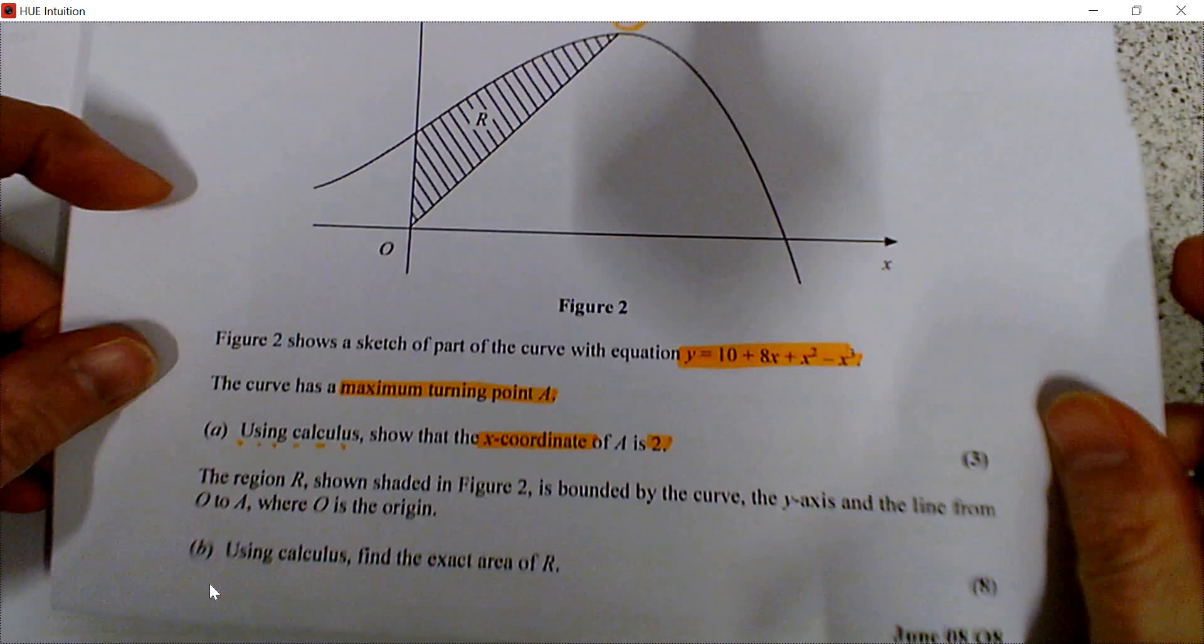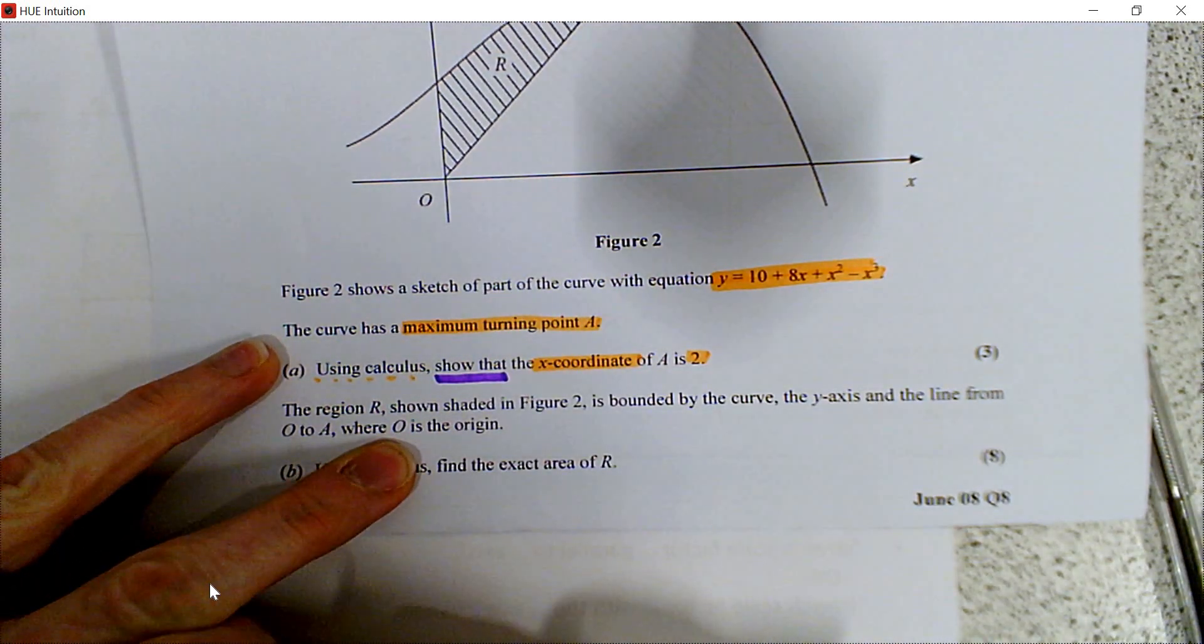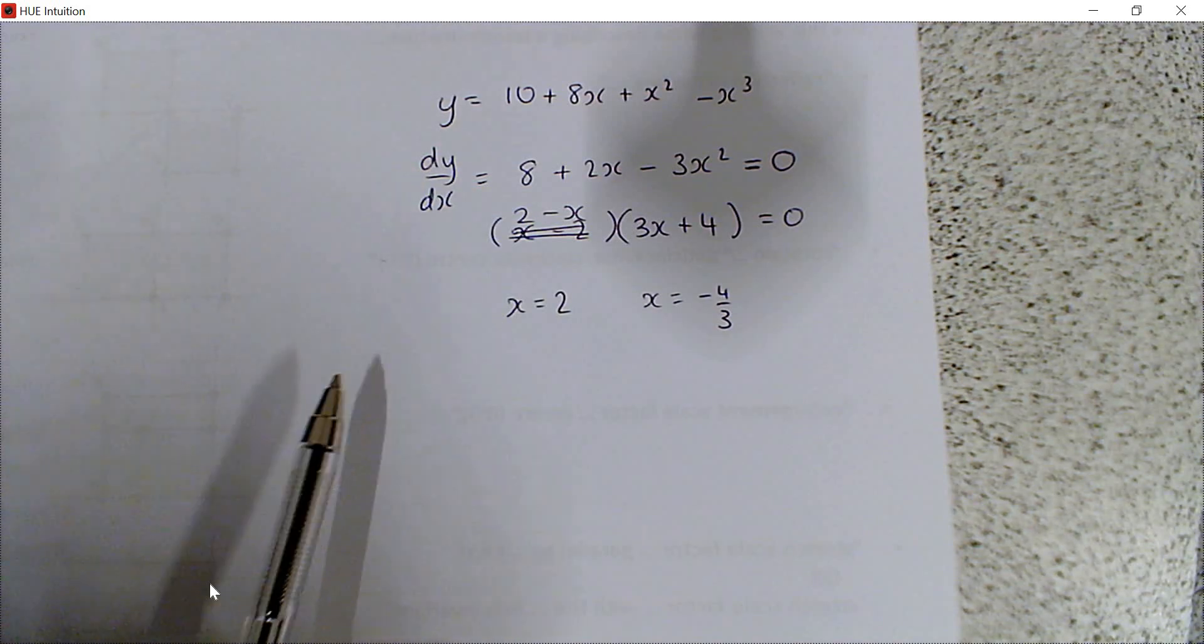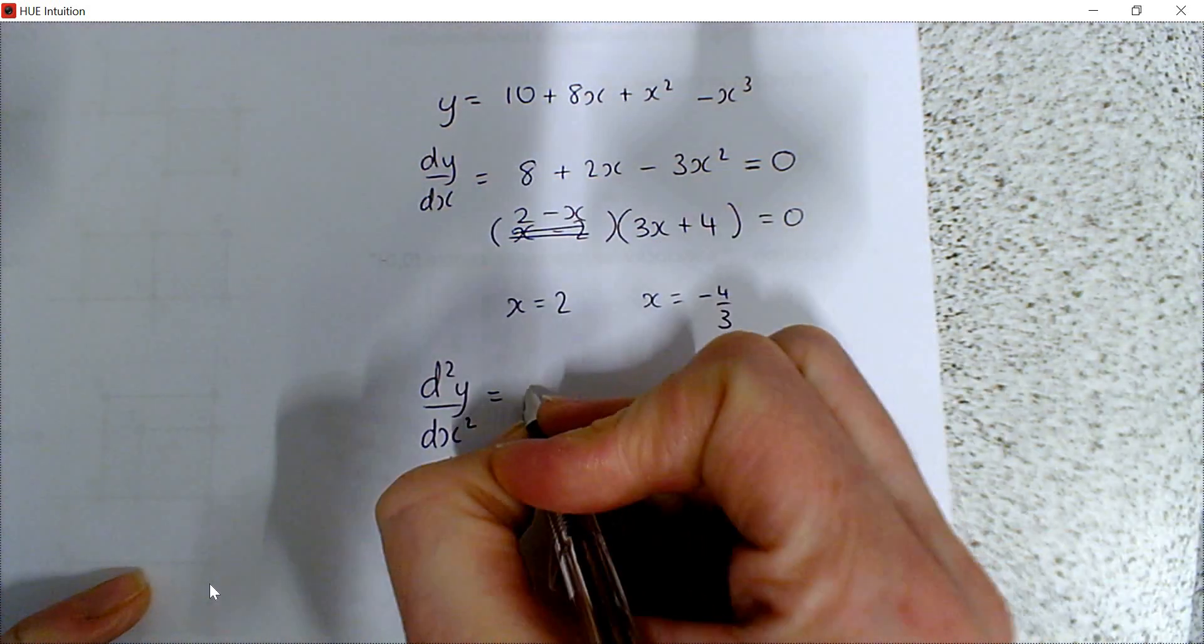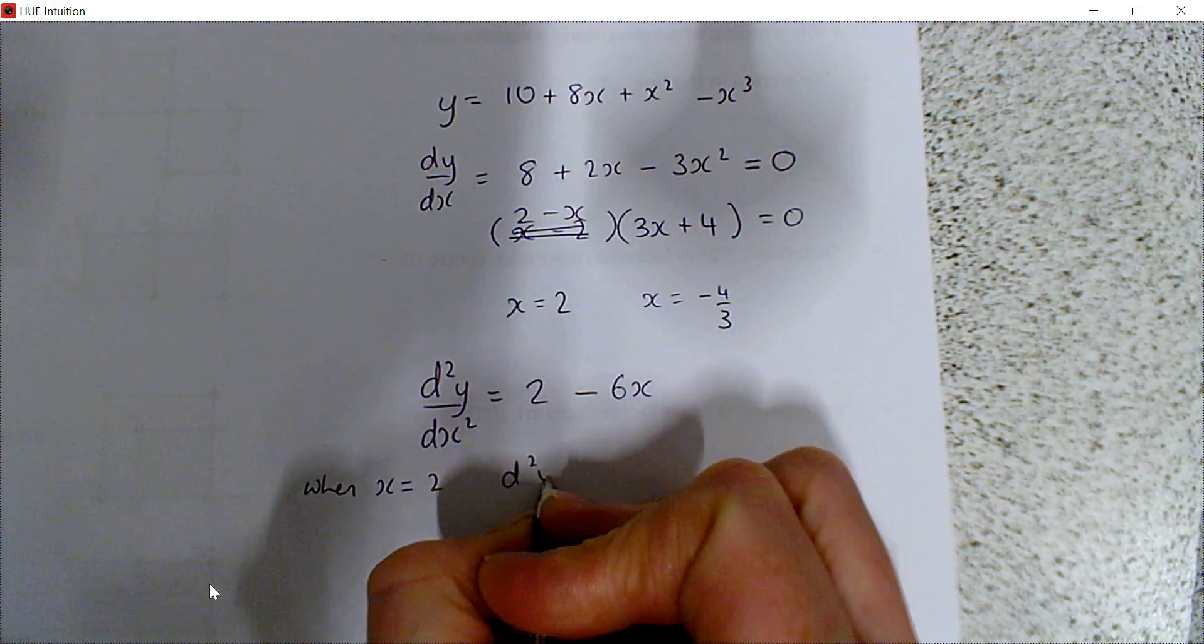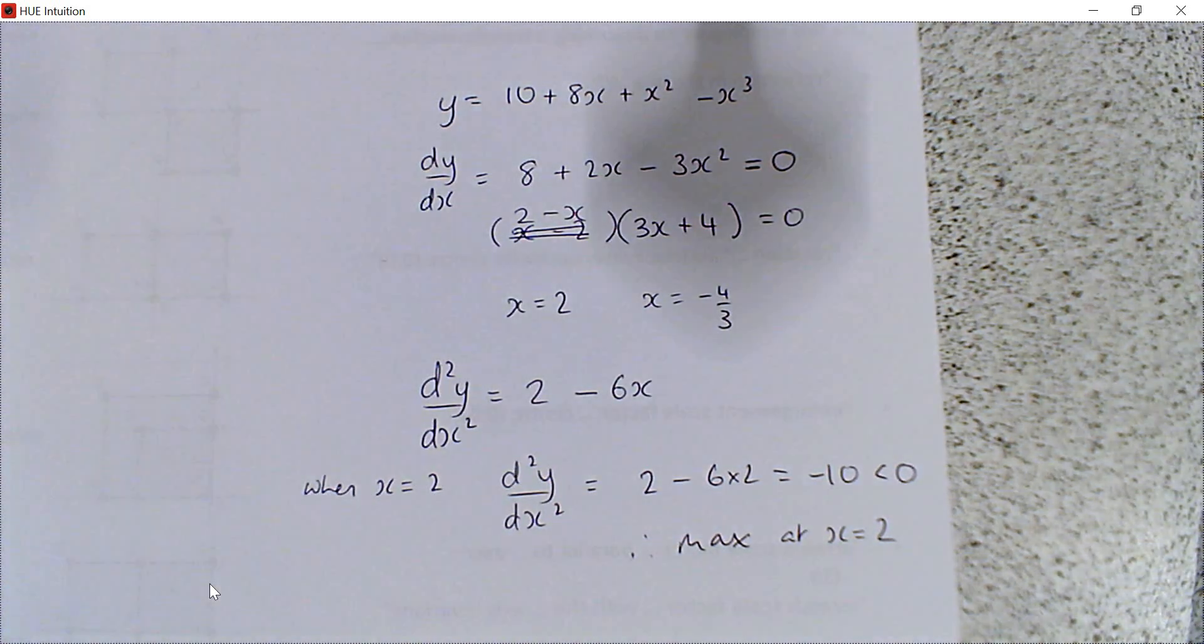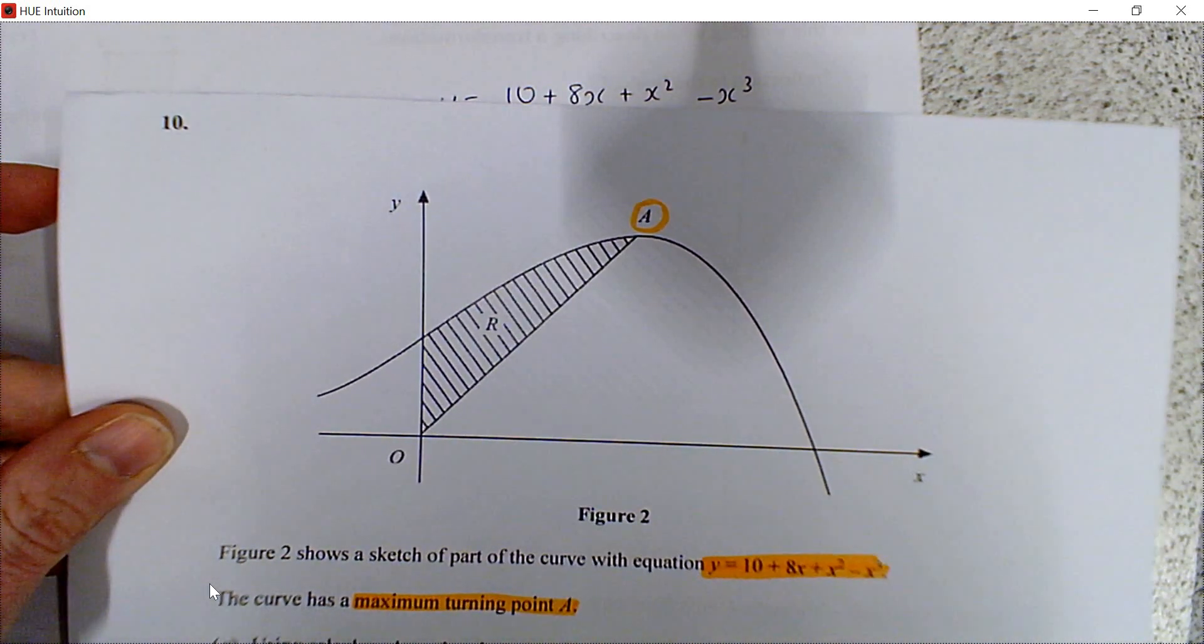Now I had to put that method in because if I read the question, it said show that. And that is a command phrase. Show that means we have to fully justify our answer. So now we've got these two, but we have to show that we have maximum at x is 2. To distinguish between minimums and maximums, we find the second derivative. The second derivative will give us 2 minus 6x. When x equals 2, the second derivative is 2 minus 6 times 2, which is negative 10, which is less than 0. Therefore, we have a maximum at x equals 2. We can see that A is where x is positive.